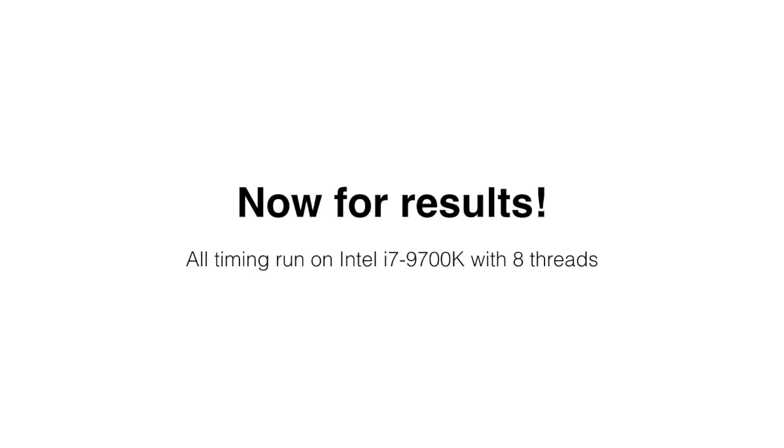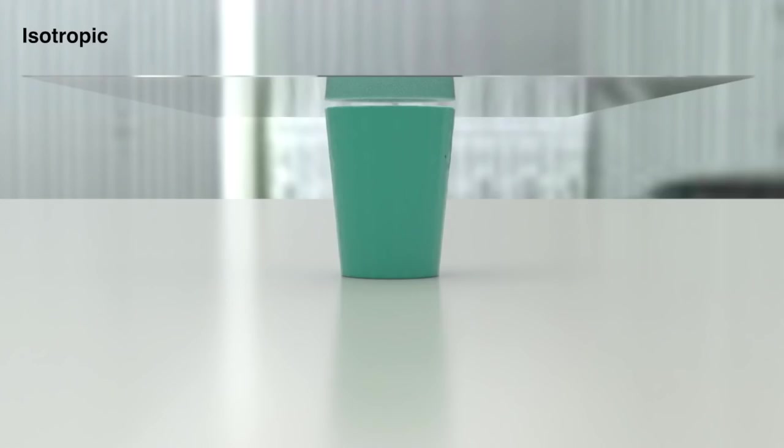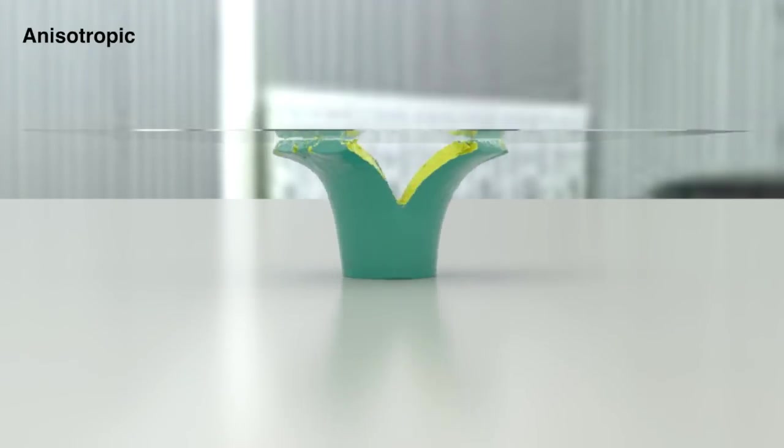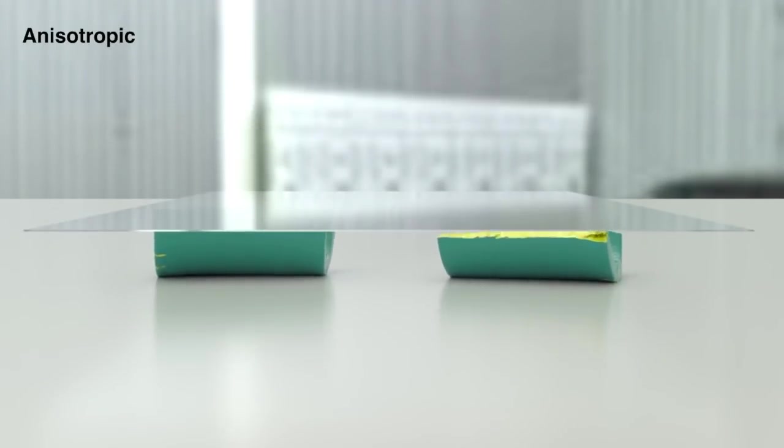Now, we'll show some results! Here, we show a successful compressive fracture for an isotropic tube. This time, the tube is anisotropic and fractures along its vertical fibers.